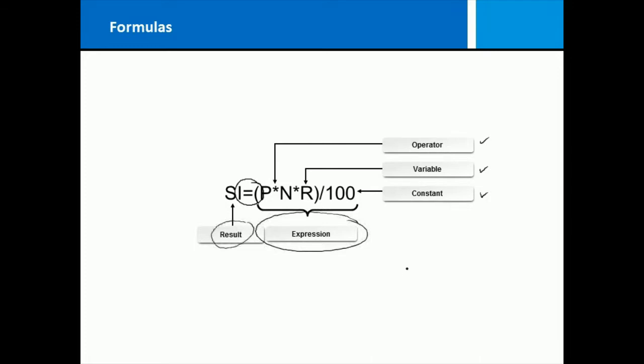So for example if I have 5 plus 5 that is going to equal 10. 10 is my result. The formula consists of a constant, another constant and an operator.